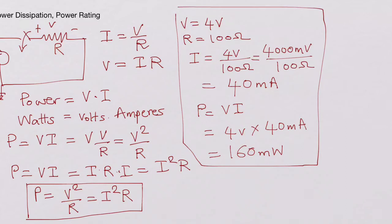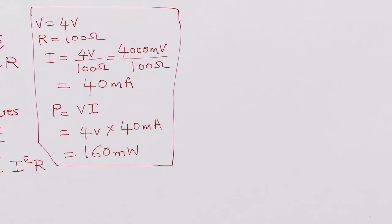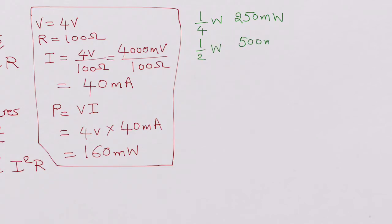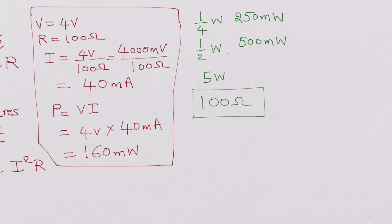Now let's look at what resistor ratings are. Resistors are rated for a particular wattage. Usually resistors are available as one-fourth watt (250 milliwatts), half watt (500 milliwatts), and going higher — you have five watt resistors. So how can a resistor be 100 ohms and still have all these different power ratings like five watts, half watt, or one-fourth watt?